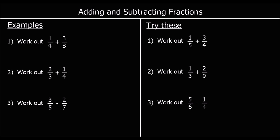We're looking to make the denominators the same, which means we're looking for a number in the four times table and the eight times table. Eight is in both times tables, so if we multiply the top and bottom of one-quarter by two — to keep a fraction equivalent we multiply top and bottom by the same thing — two times one is two, two times four is eight. So one-quarter is the same as two-eighths, and we can do two-eighths plus three-eighths. Two of something plus three of something is five of something, so the answer is five-eighths.